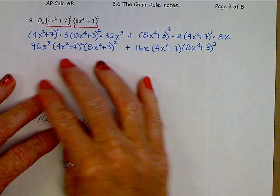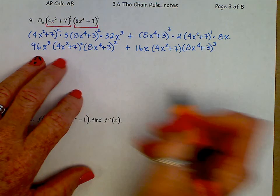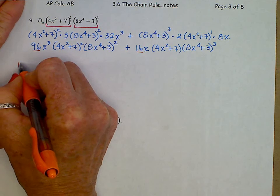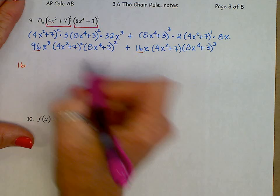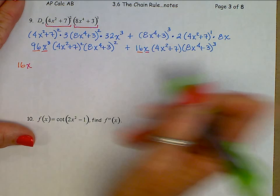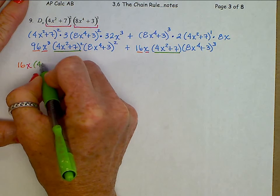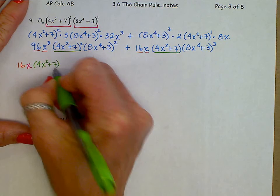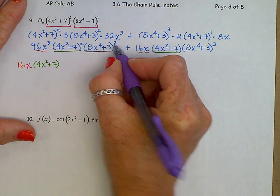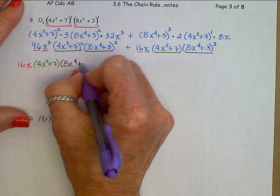We are not done here — we need to factor this. Look for what's common. Between 96 and 16, we can pull out a 16. Between X cubed and X, we can pull out an X. Between (4X squared plus 7) squared and (4X squared plus 7), we get (4X squared plus 7) to the first. And between (8X to the 4th plus 3) squared and (8X to the 4th plus 3) cubed, we can pull out (8X to the 4th plus 3) squared.